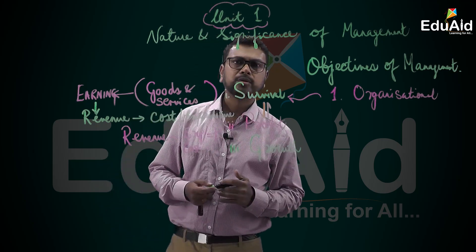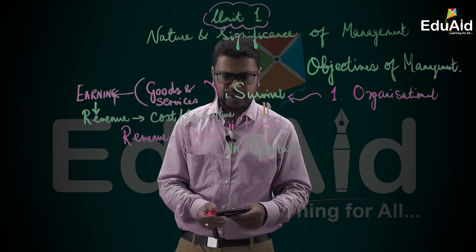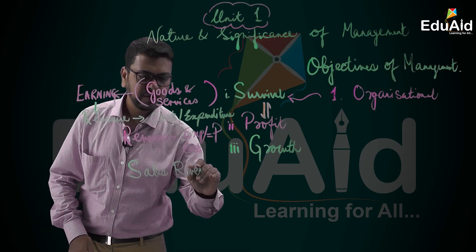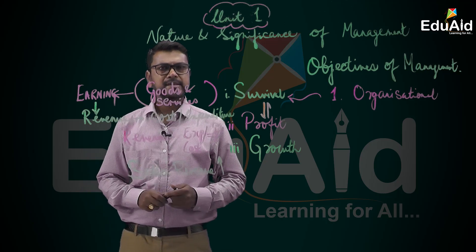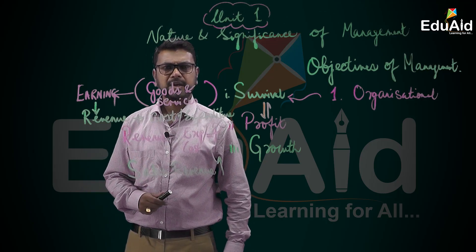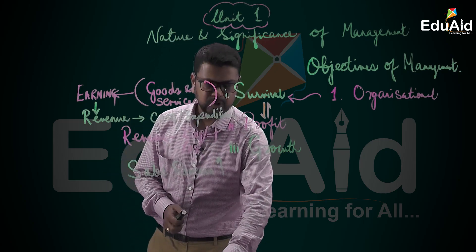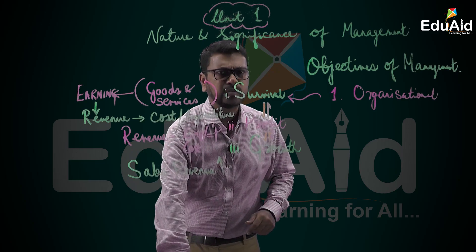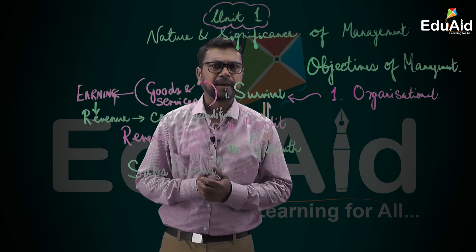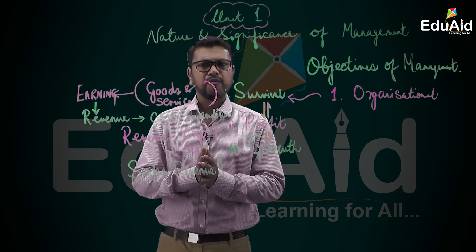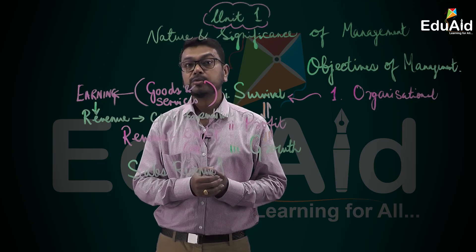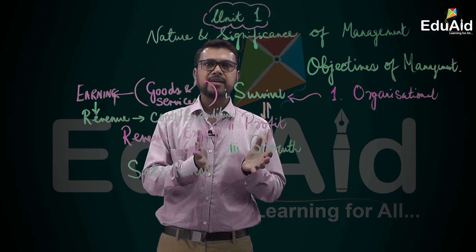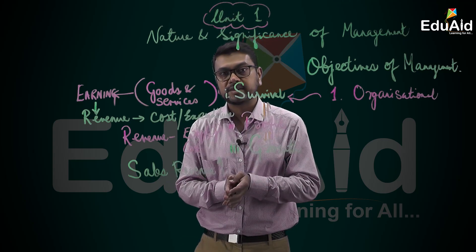The third objective is growth. Growth would mean growth in sales — the sales revenue should increase. How does sales revenue increase? When you offer appropriate goods and services. Growth in the organization will help it grow again only through effective utilization of resources, offering need-based services or goods to consumers.